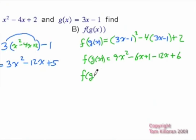And then simplify a little further. f of g of x is equal to 9x squared minus 18x plus 7. And that would be f of g of x. And since the domains of polynomials are all real numbers, we have no worries about domain restrictions here.